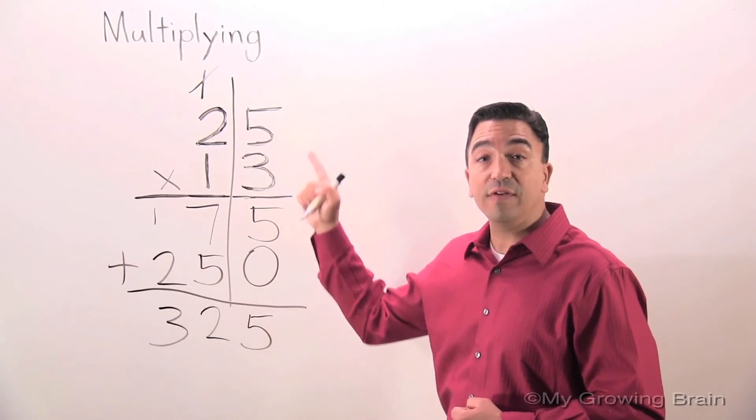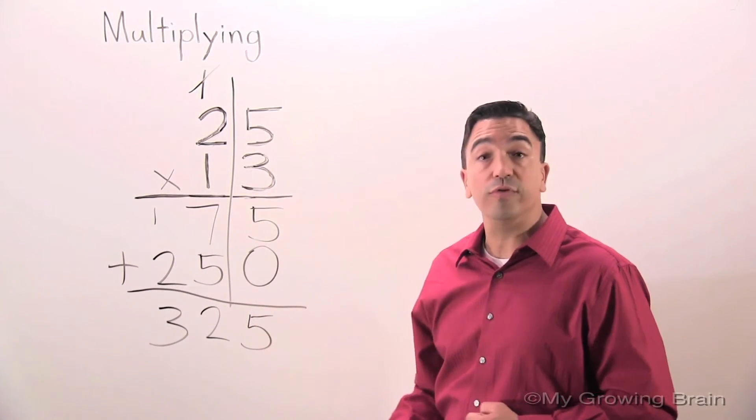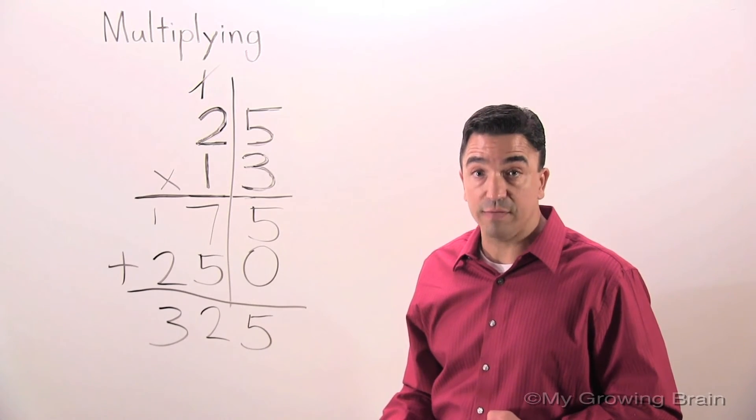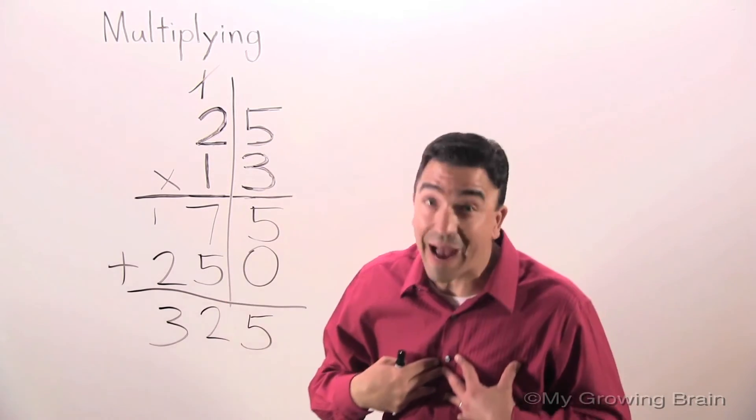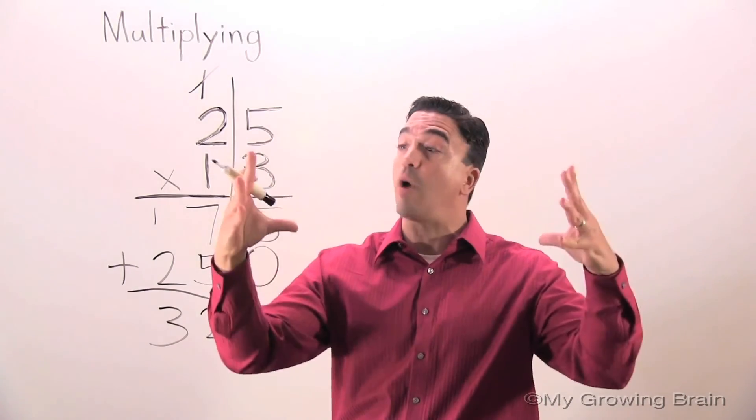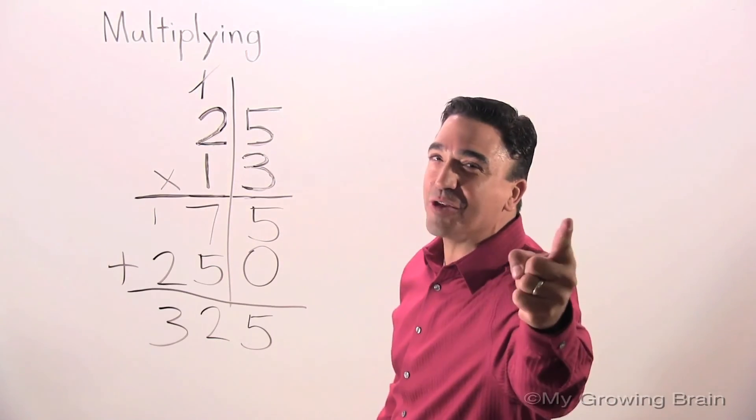25 times 13 equals 325. This concludes our lesson on multiplying. Coach Mike at My Growing Brain. Challenge yourself.